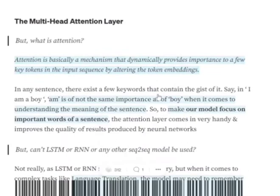Attention is basically a mechanism where we are trying to assign more importance to some tokens. We do this by tweaking the token embeddings that are input to this layer, so that important tokens in the entire sentence automatically get more importance — their embeddings get changed a bit so they receive more importance while being learned by the model.